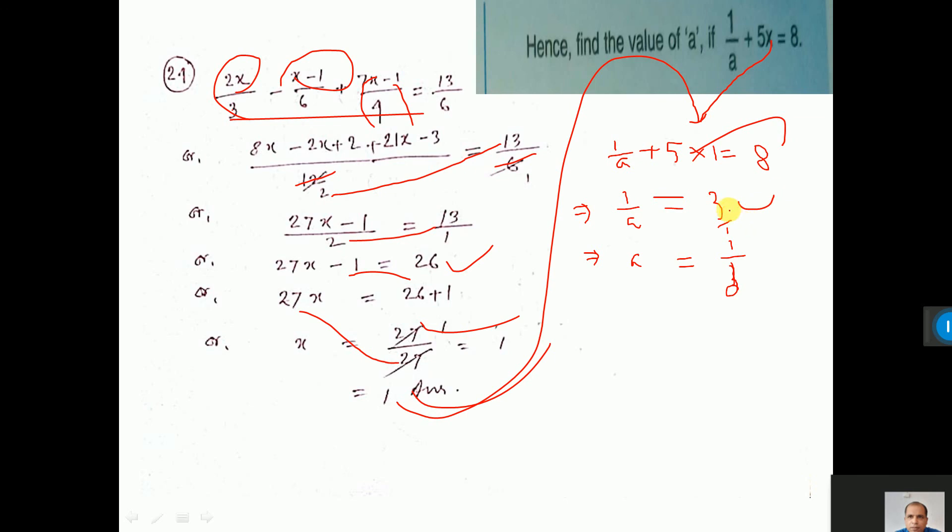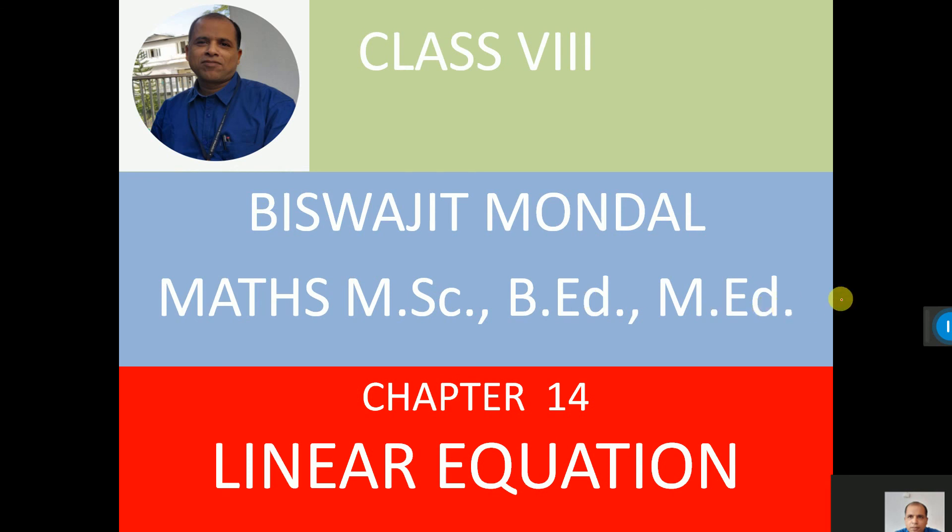Then do cross multiplication. 3a equal to 1. That means a equal to 1 by 3. This is 3. That's all for this video.